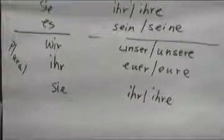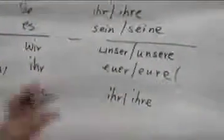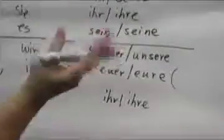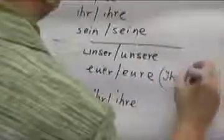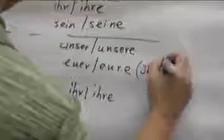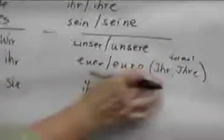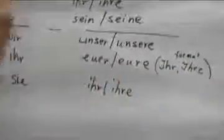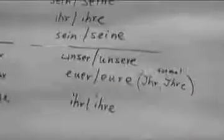And now ihr also has a formal way of saying it. If I talk to a group of adults, I would say, is this your book? For example, if they share a book, then I would have to say, ist das Ihr Buch, oder sind das Ihre Bücher, if you talk about more than one. And this is the formal way again. And you use that when we address a person. If I say Mr. or Mrs., then we use the formal. If you talk about people, we don't use it. Only when we address them.